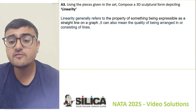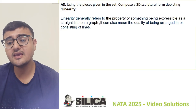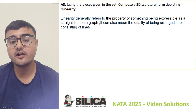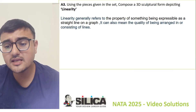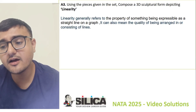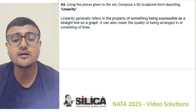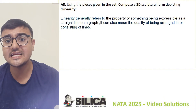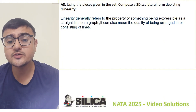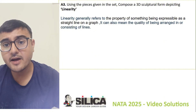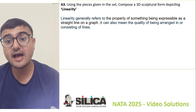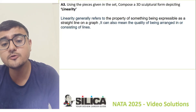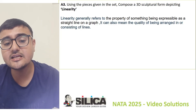Linearity generally refers to the property of something being expressible as a straight line on a graph. It can also mean the quality of being arranged in, or consisting of, lines. Basically, you have to create straight lines as part of your 3D composition — you have to arrange the composition to depict linearity, which is about the straight line.